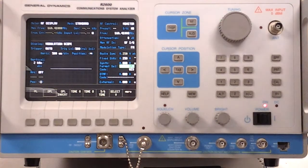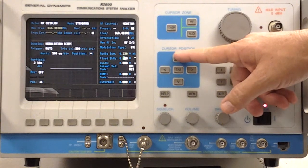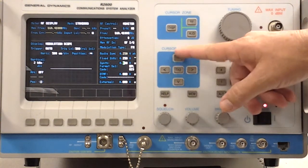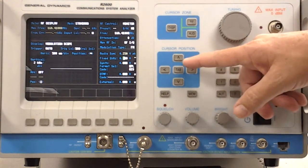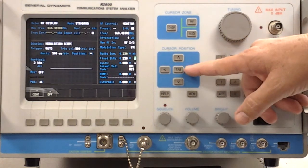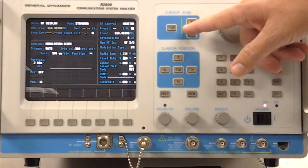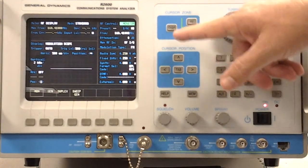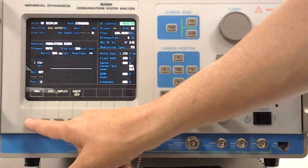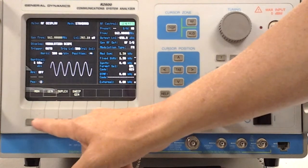Within the cursor zones, we establish or set our cursor position to change, like in this current position, we would change our fixed deviation. We could go to the RF cursor zone and select either Monitor, which is the condition we're in now, or we can select Generate.